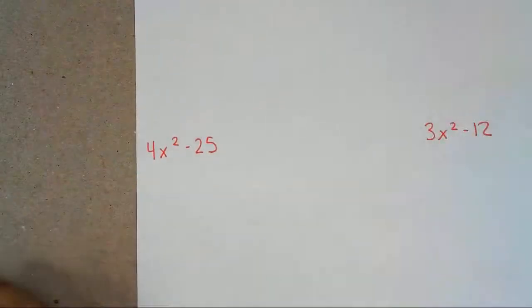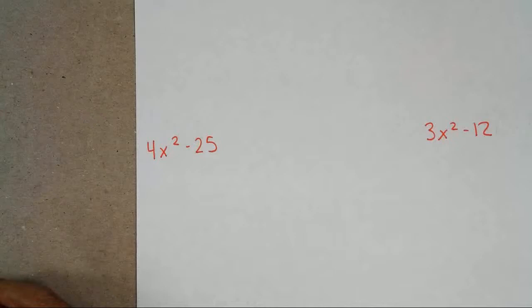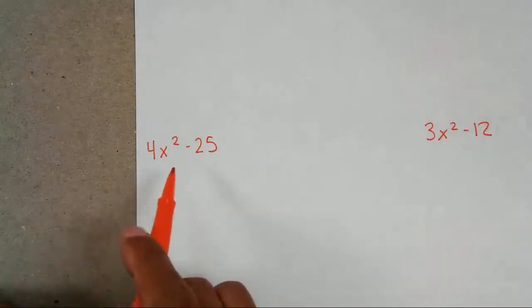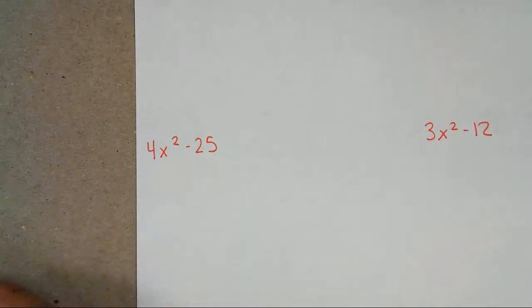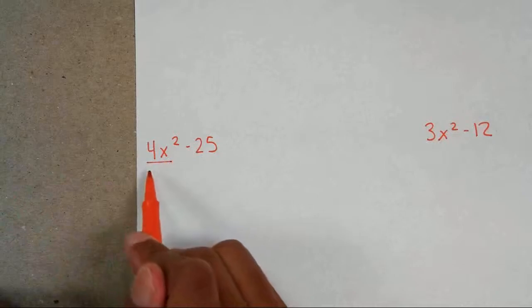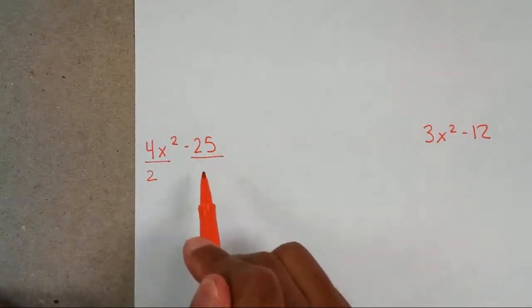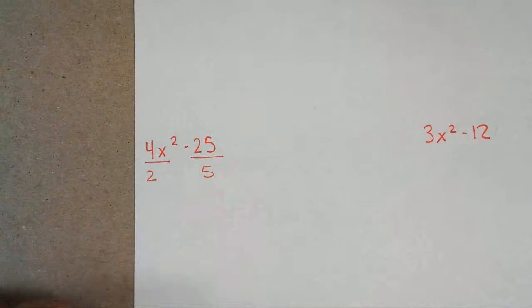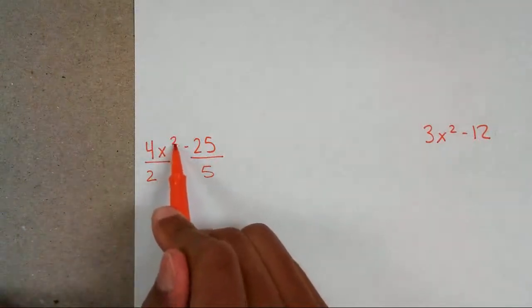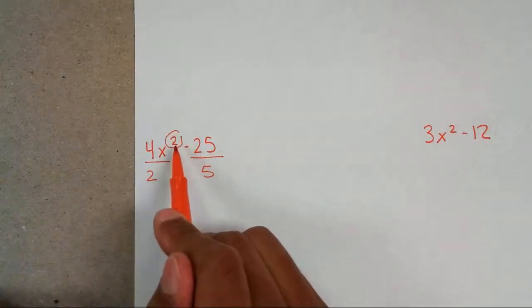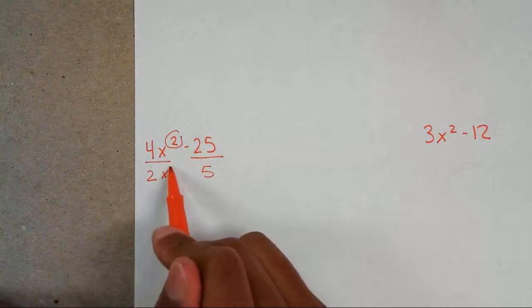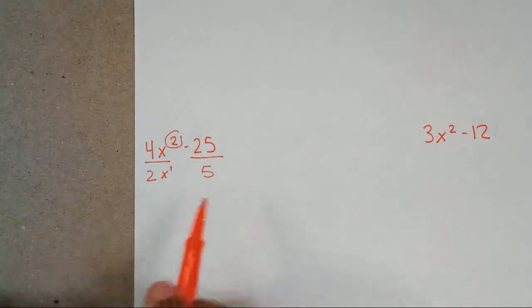Now what about 4x squared minus 25? They always want to make this a little bit more difficult, and that's because they want to add an extra number. But what you have to do is always notice there's two terms. I can't take out a GCF. What do you notice about these numbers? The base of 4 is 2 because 2 times 2 is 4, and the base of 25 is 5 because 5 times 5 gives you 25. And remember the exponents? I can divide this exponent by 2. 2 divided by 2 is 1. So this is x to the first power. So I found my bases.